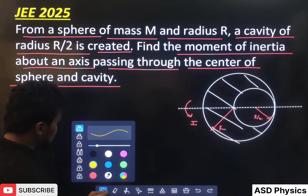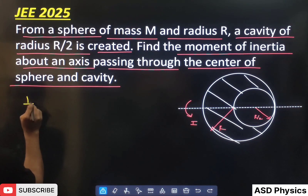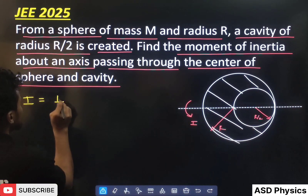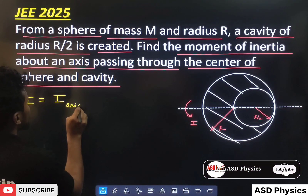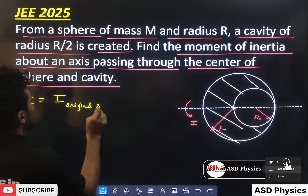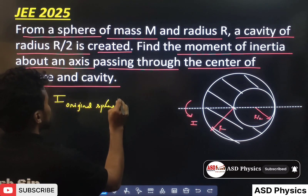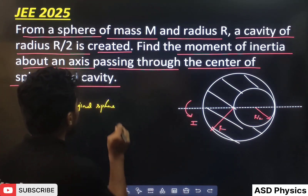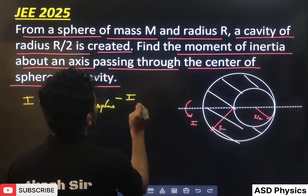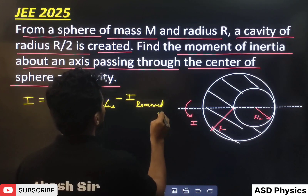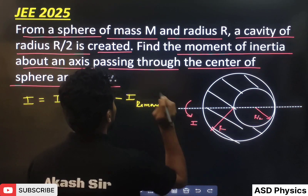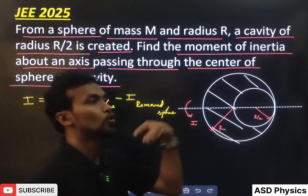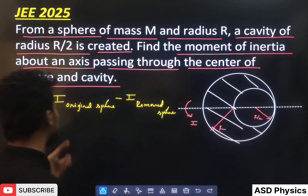This is actually a very easy question. The moment of inertia is given by: moment of inertia of the original sphere — when there is no cavity and the complete sphere is there — minus the moment of inertia of the removed sphere. We can break it into two parts: the original one and the removed one.